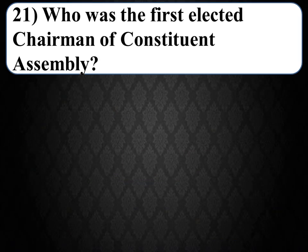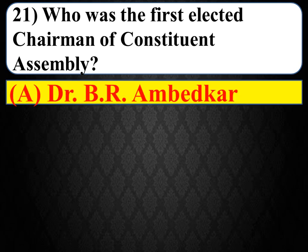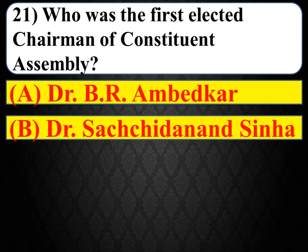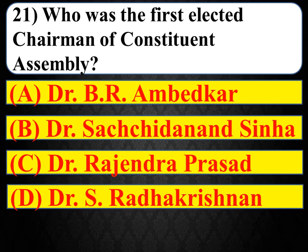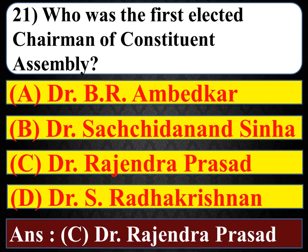Next question: who was the first elected chairman of the Constituent Assembly? Options: Dr. B.R. Ambedkar, Dr. Sachidhananda Sinha, Dr. Rajendra Prasad, Dr. S. Radhakrishnan. The right answer is C — Dr. Rajendra Prasad was elected the first chairman of the Constituent Assembly.